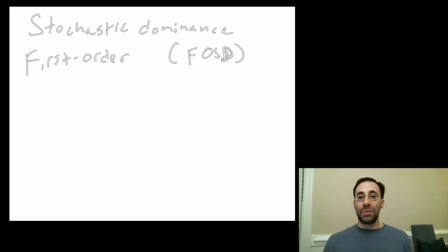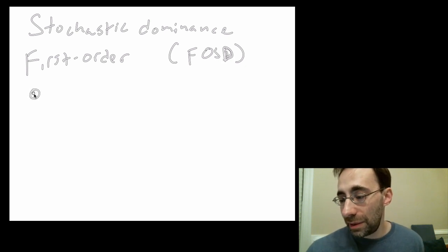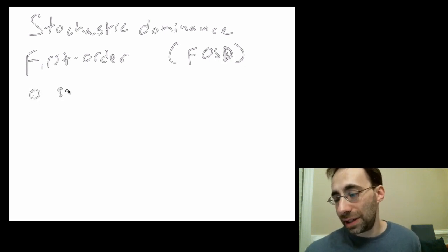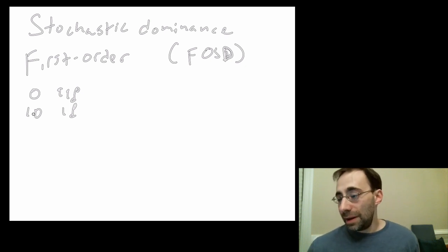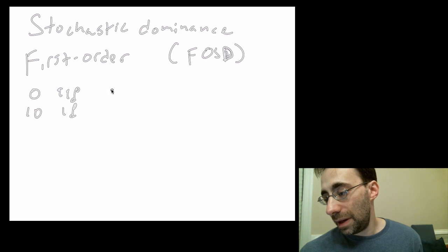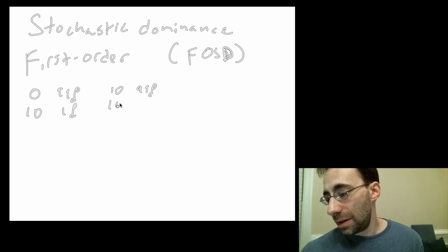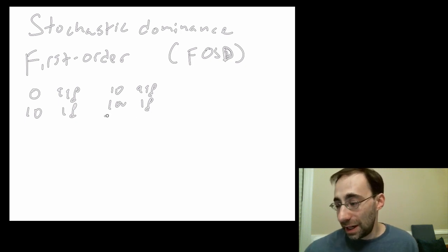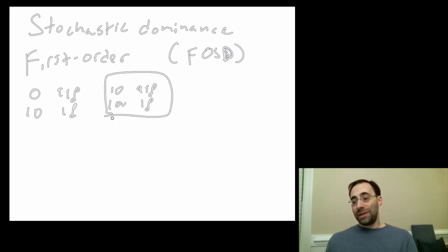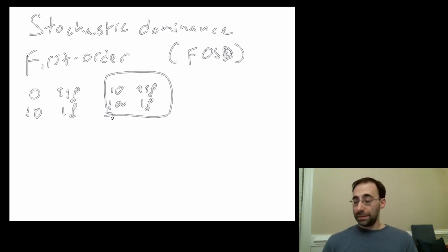Let's take the lottery example we've been doing so far. Let's say there's one lottery that has around a 99% chance of giving you zero and a 1% chance of giving you $10 — not a good lottery. Now, let's say another lottery that has a 99% chance of giving you $10 and a 1% chance of giving you $100. Much better lottery. The second lottery stochastically dominates the first lottery — in fact, it first order stochastically dominates it.